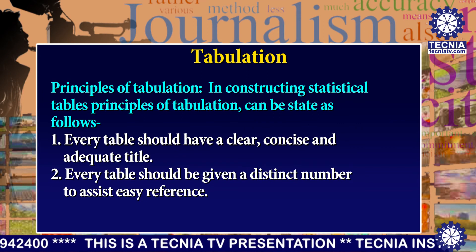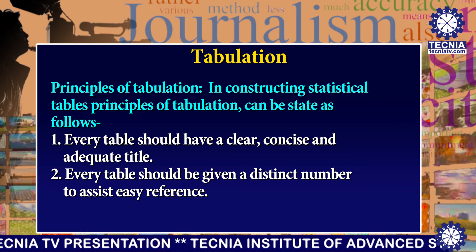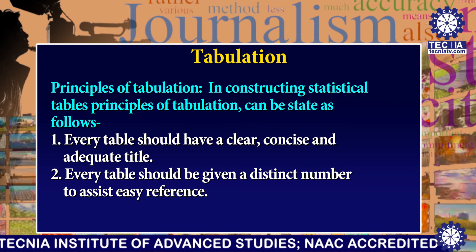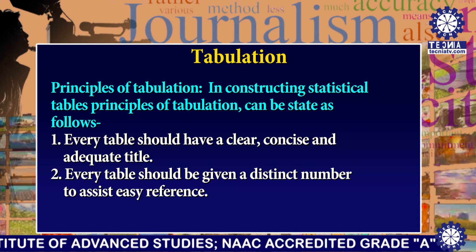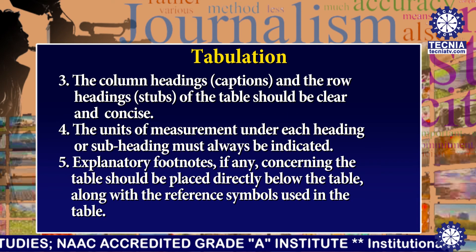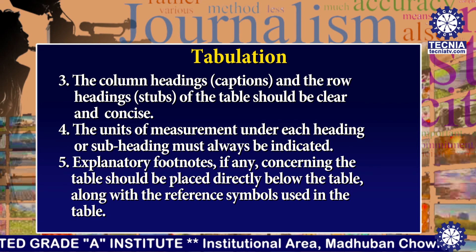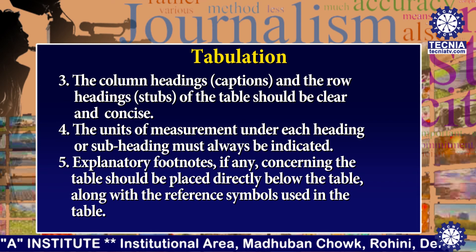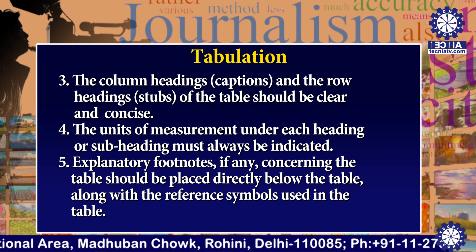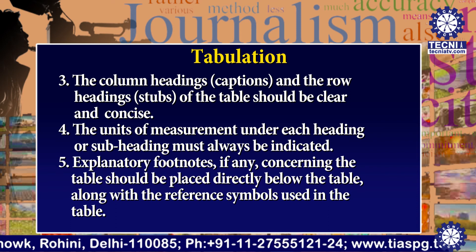Now I am explaining the principles of tabulation. In constructing statistical tables, the principles can be stated as follows. First, every table should have a clear, concise, and adequate title. Second, every table should be given a distinct number to assist easy reference. Third, the column headings and row headings of the table should be clear and concise. Fourth, the units of measurement under each heading or subheading must also be indicated. Fifth, explanatory footnotes concerning the table should be placed directly below the table along with the reference symbols used in the table.